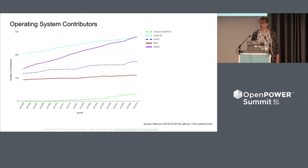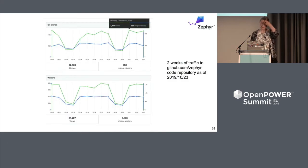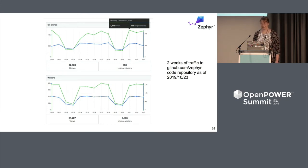We actually have probably now the most contributors to any of these RTOSs as of this last month — we crossed the line that embed had. And then obviously we've seen people use it. In a two-week period, almost 9,800 people are cloning it — unique people — and there's 12,000 clones going down. So people are downloading it and doing things with it. Now, of course, since it's embedded and it's open source, the question is what are they doing with it? Let's see if we can do some detective work to figure that out.